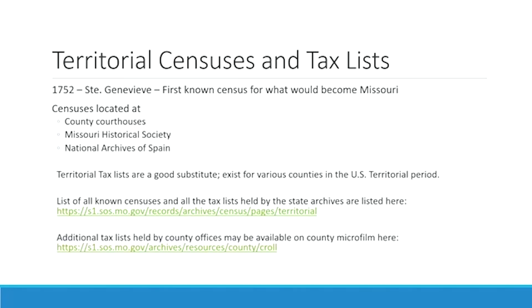Starting with territorial censuses and tax lists — when we say territorial censuses we could be referring to French territorial censuses, Spanish territorial censuses, or U.S. territorial censuses, although there are not any known U.S. territorial censuses. 1752 is the first territorial census for Missouri that we are aware of — it's the 1752 census of St. Genevieve. We have U.S. territorial tax lists up through 1820, so the territorial time period covers 1752 to 1820.